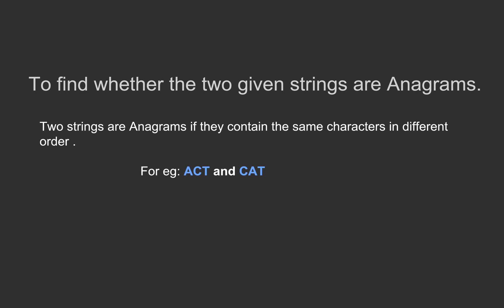Hello, in this video we would be discussing about how to find out whether the two given strings are anagrams. Two strings are called anagrams if they contain the same characters in different order. As we see in the example here, 'act' and 'cat' are anagrams as they have the same characters.